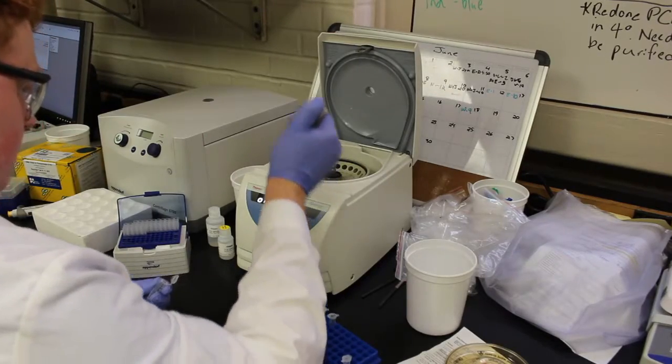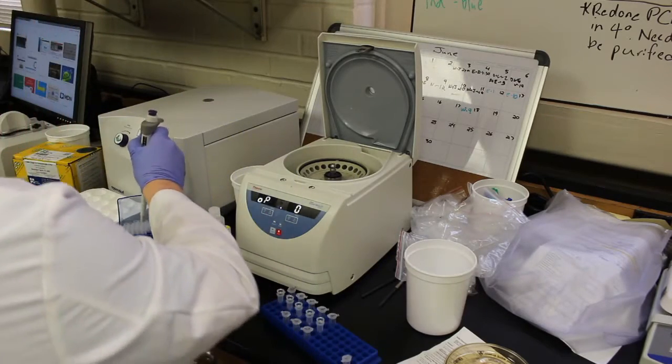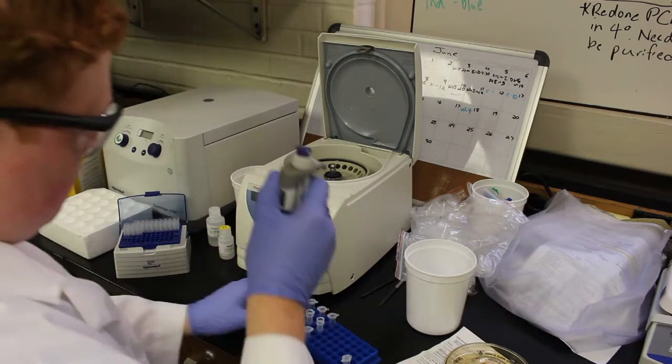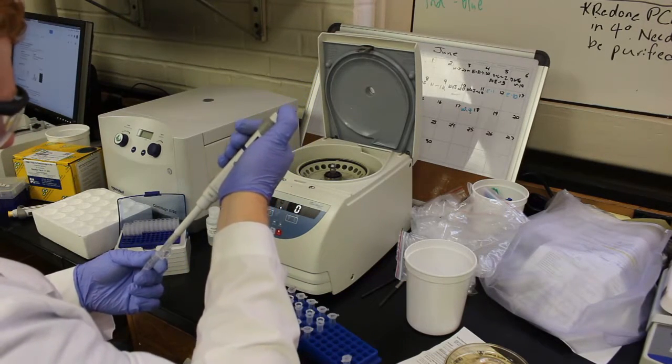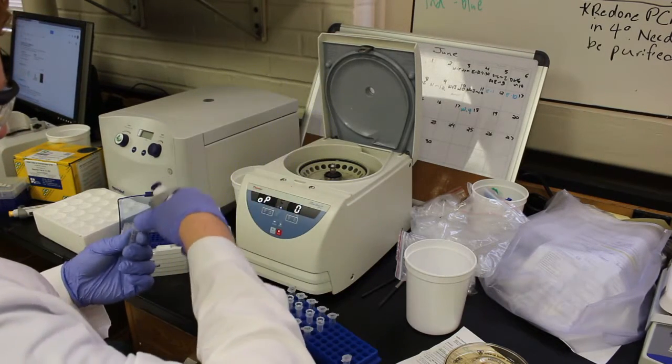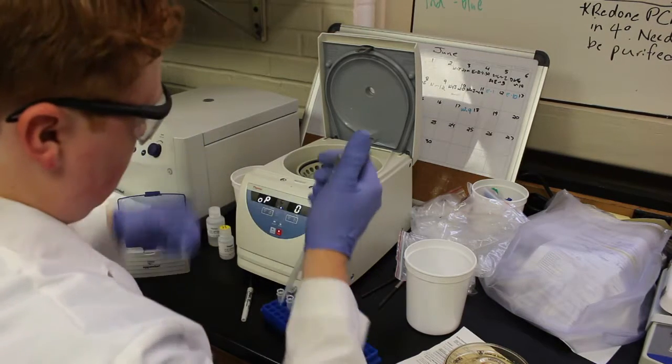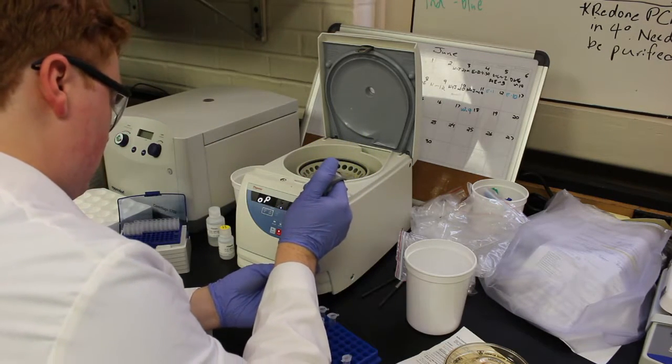You can currently see a solution being transferred from a centrifugal tube to a column wash tube construct. In this case, the centrifuge is being used to move the transferred solution through the column, resulting in desired molecules bonding to the column. This allows for easy separation of solutions containing many complex molecules.